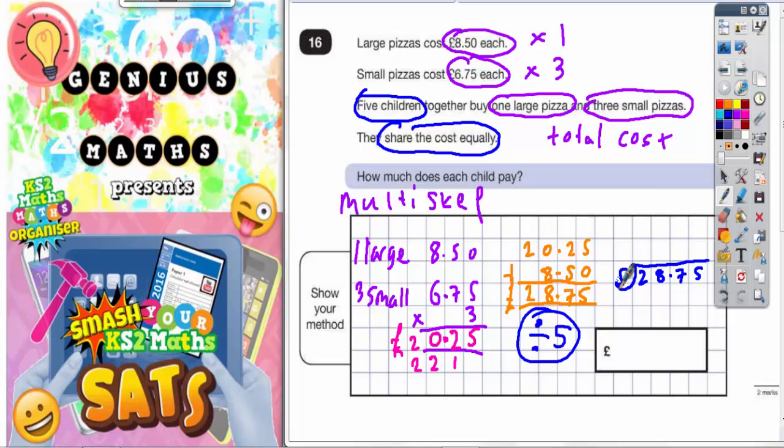Let's have a look at that. Fives into two won't go. We haven't used the two. Fives into 28 goes five times. That's 25 which leaves three left over to get up to 28. So we carry the three to make 37.